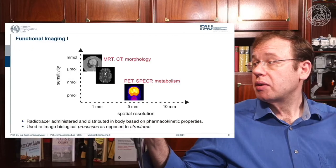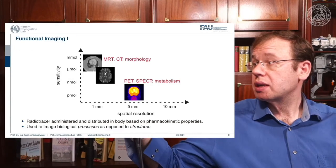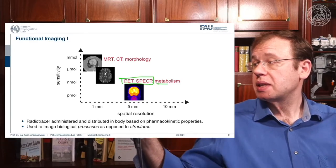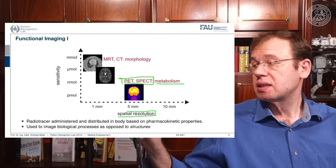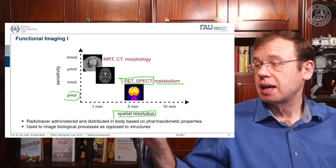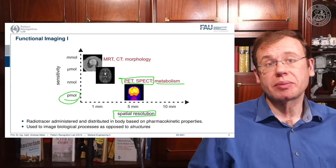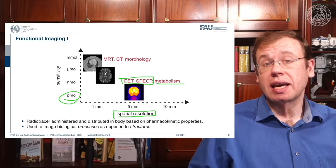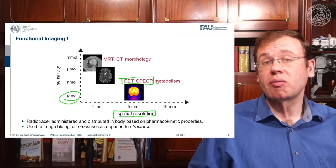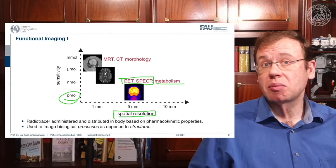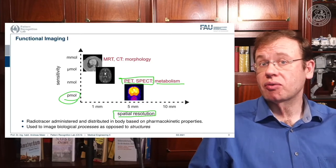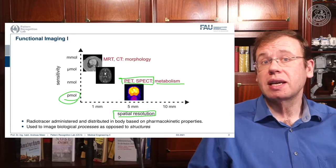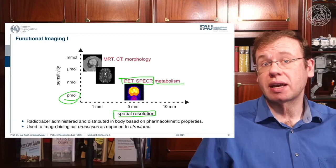We are talking about functional imaging here. Nuclear imaging devices PET and SPECT measure metabolism and have a rather coarse spatial resolution, but they are able to measure picomole quantities — very fine amounts of tracer. This is important because we want to use only a minimum of radioactive tracer inside the body, since it is ionizing radiation that can break down DNA strands and may introduce cancer. So we want to be very careful.